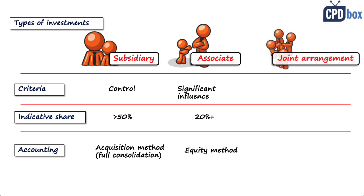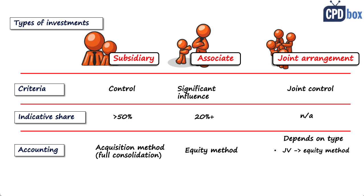Joint arrangements are a bit different because there is joint control of two or more parties over a business or operation. Because control is joint, it makes no sense to specify a single share amount — it can be 50% with two parties, 33% with three parties, and so on. The method of accounting depends on the type of joint arrangement: for joint ventures, you apply the equity method; for joint operations, the investor accounts for its share of assets, liabilities, revenues, and expenses on the joint operation.